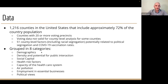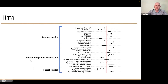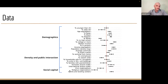These factors were grouped into eight categories. We have demographics, which includes things like age — what's the percentage of people in the county younger or older than 25 — age segregation, ethnicity, education, income, and income segregation. Then we had controls related to density and public interaction: population density, how many people are commuting, how many people live in buildings with 50+ units, domestic and international airport traffic, and social capital like civic organizations, religious organizations, and sports and bowling centers.